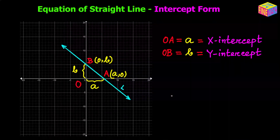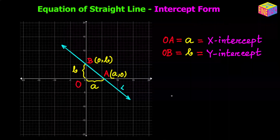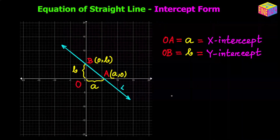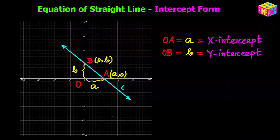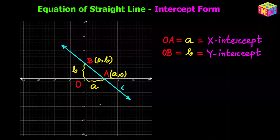So the distance of point A from the origin is called the x-intercept, and the distance of point B from the origin is called the y-intercept. In our diagram, lowercase a is the x-intercept and lowercase b is the y-intercept.